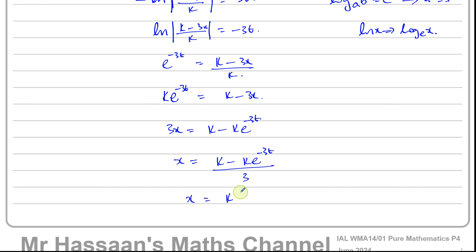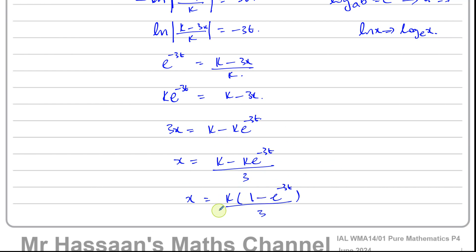Rearranging: 3x equals k minus k times e to the power of minus 3t. So x equals (k minus k·e^(−3t)) / 3, or factoring out k: x equals k/3 times (1 minus e^(−3t)). That is x as a function of t, and the answer to part A in terms of k.